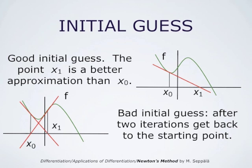It could be even worse. Starting with an unfortunate initial guess, we might get a next iterate that is actually a much worse approximation of the solution than x0 was. So this process is sensitive to the choice of the initial guess.